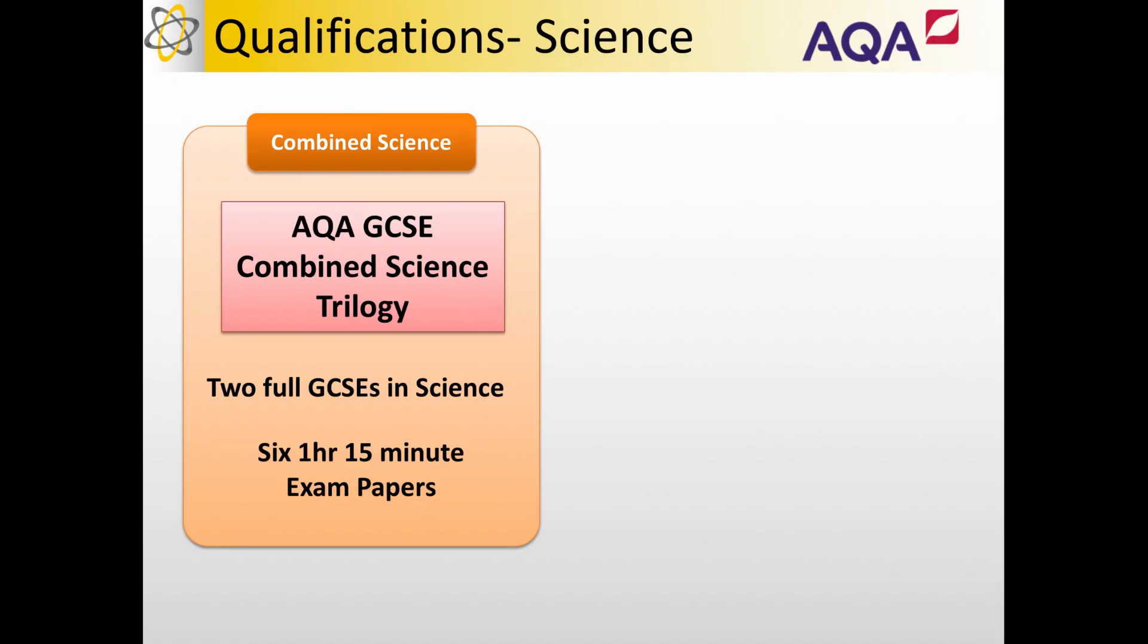You could be sitting AQA GCSE Combined Science which is going to give you two full GCSEs in Science which will encompass Biology, Chemistry and Physics. To do that you'll need to take six 1 hour 15 minute exam papers. Two in Biology, two in Chemistry and two in Physics.